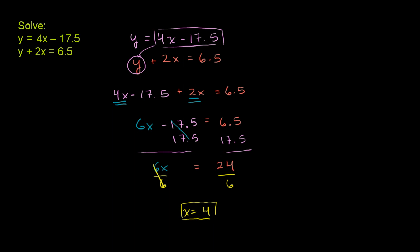So let's just do this top one. If we assume x is equal to 4, this top equation tells us that y is equal to 4 times x, which in this case is 4, minus 17.5. Well, this is equal to 16 minus 17.5, which is equal to negative 1.5.